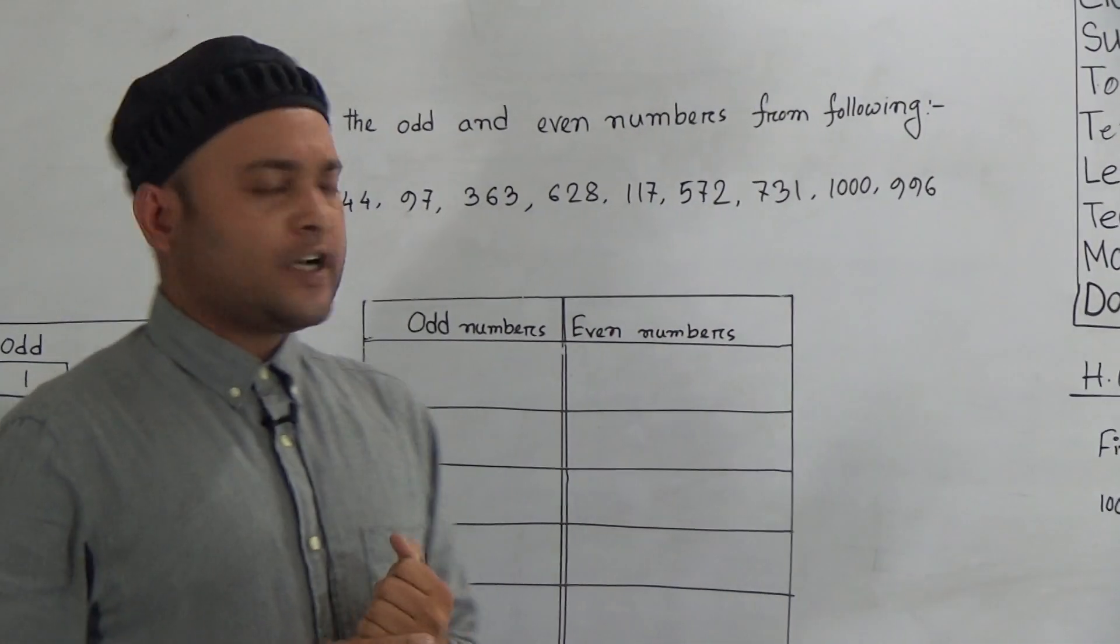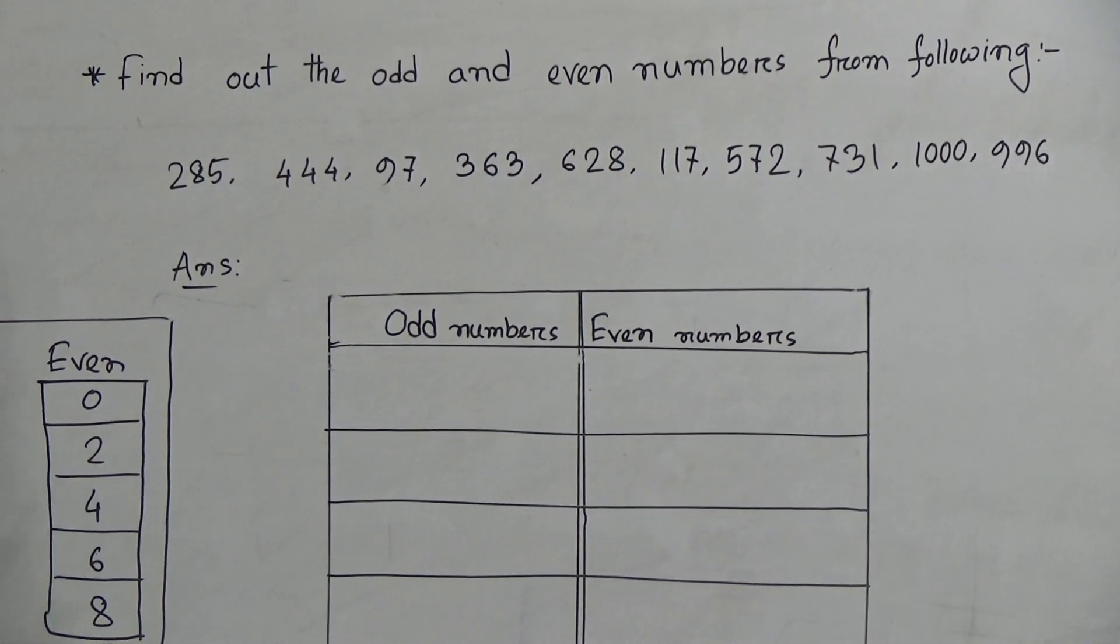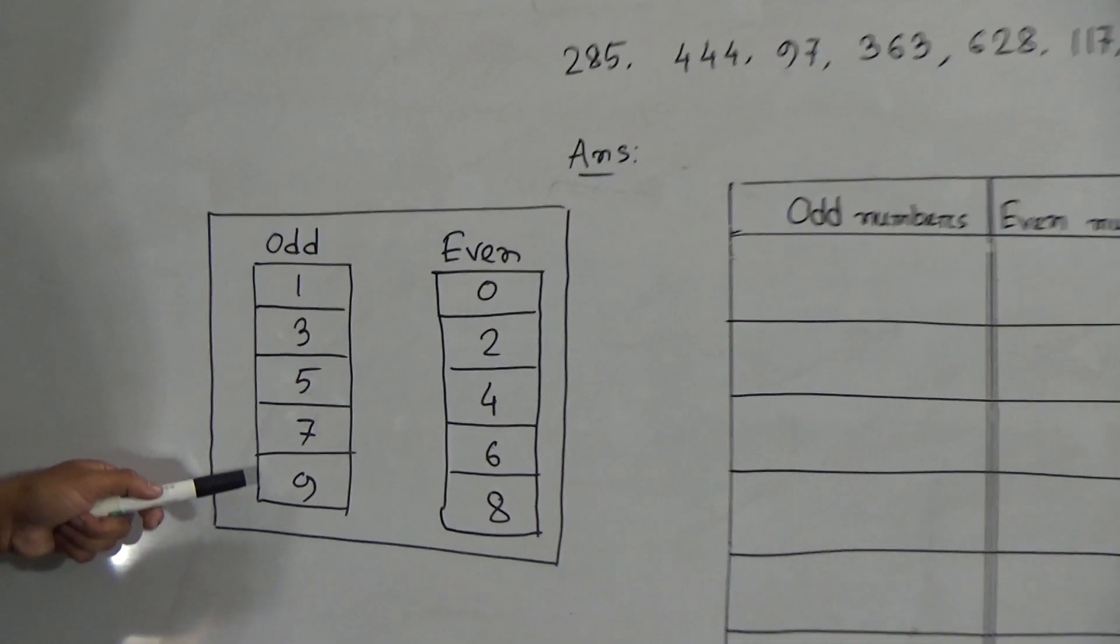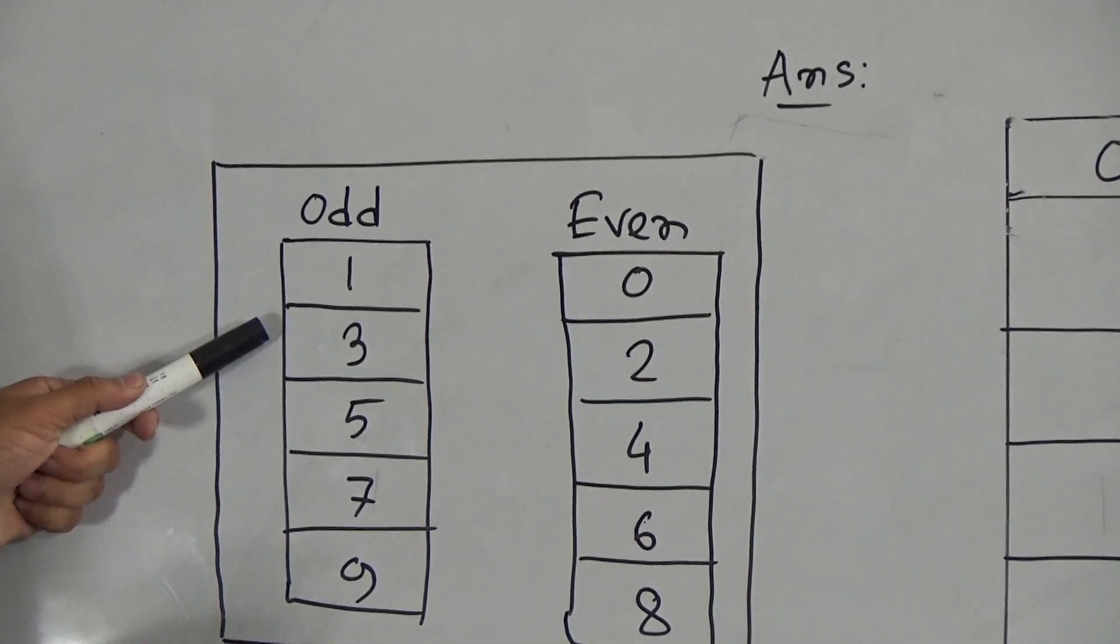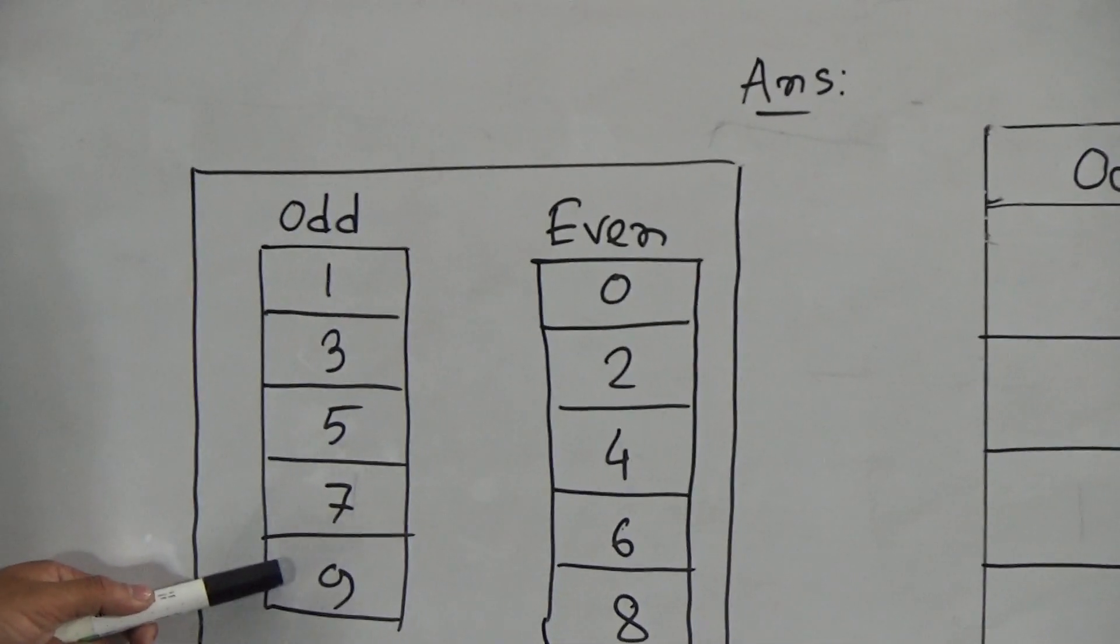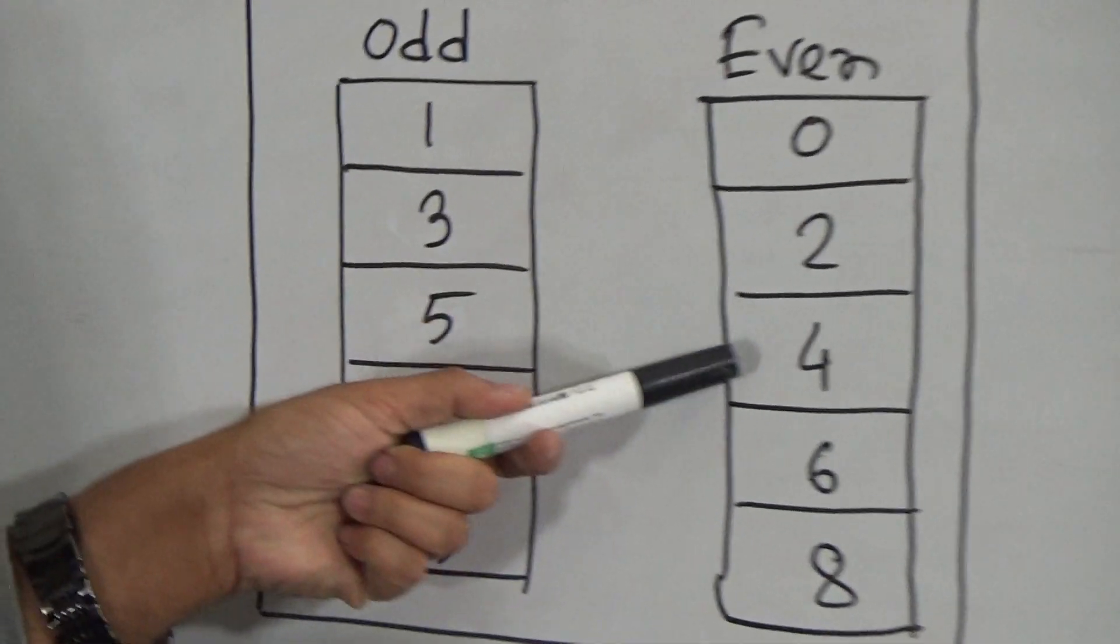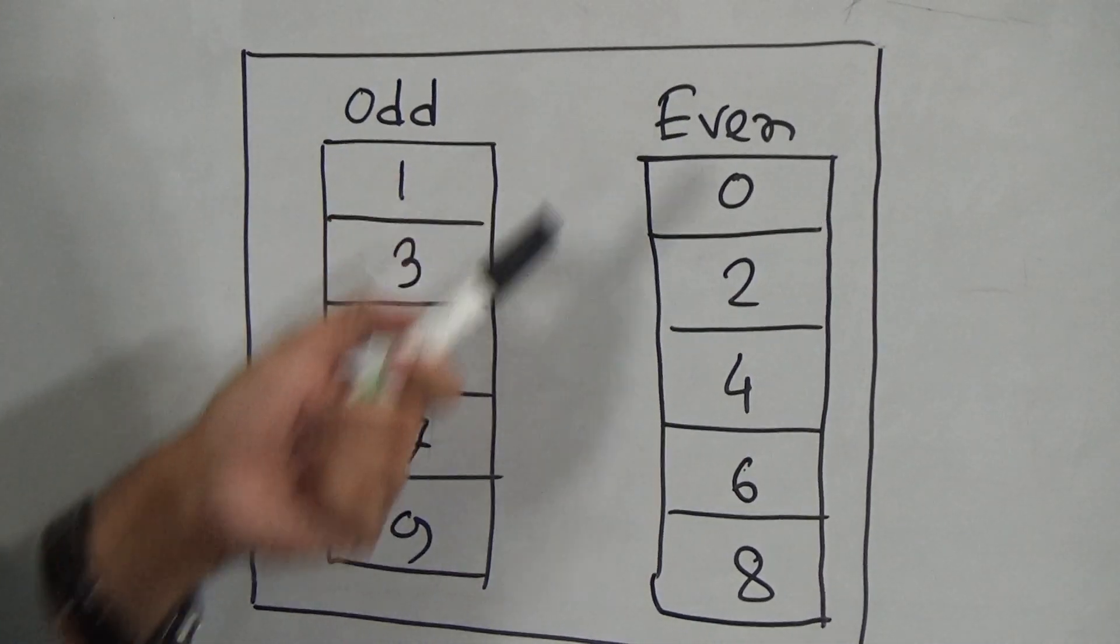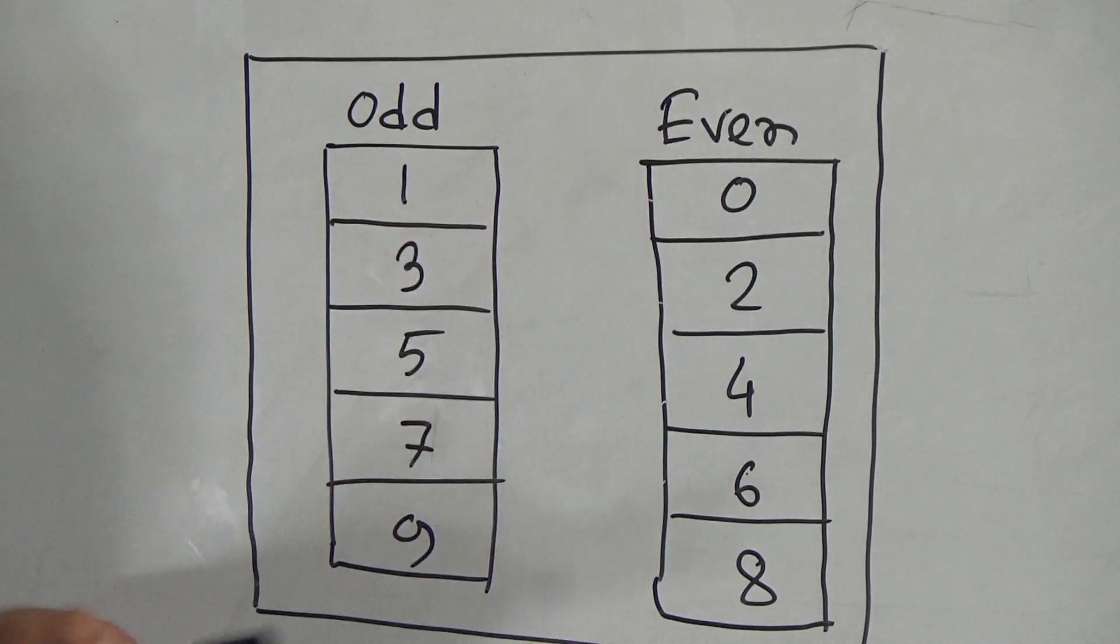Now today we will learn how to know the odd and even numbers easily. First of all, you know that at the place of the last digit of a number, if you find 1, 3, 5, 7, and 9, I repeat, at the last digit of a number you will find 1, 3, 5, 7, and 9, then it is an odd number. And similarly, if you find 0, 2, 4, 6, and 8 at the last digit, it is an even number.